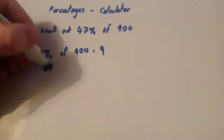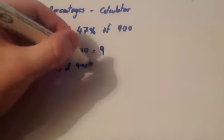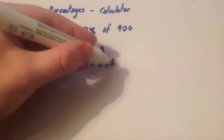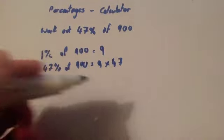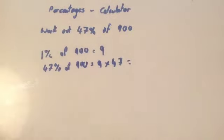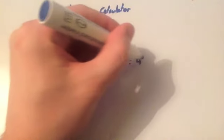So to get 47% of 900, you'll do 9 times 47. Because you get 1% and you just times it by the percent you want. So you do 9 times 47, and because you've got a calculator, you might as well use it. 9 times 47 is 423. So the answer is 423.